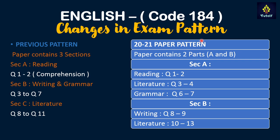According to the new English pattern, the paper will contain two parts: A and B. Section A includes reading (questions 1 to 2), literature (questions 3 to 4), and grammar (questions 6 to 7). So basically parts of the old Section A and B have been clubbed together into the new Section A.